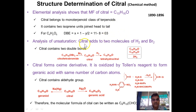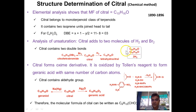To find out the nature of these unsaturations, citral was subjected to hydrogenation, giving tetrahydrocitral with molecular formula C10H20O, and to bromination, forming citral tetrabromide. From the arithmetic of molecular formulas, two molecules of hydrogen are consumed, which means citral contains two carbon-carbon double bonds. Out of three degrees of unsaturation, two are now accounted for by double bonds.